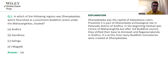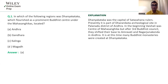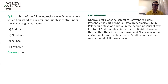The other options — Gandhar, Kalinga, and Magadha — are incorrect. Gandhar is known as a Mahajanapada of the 6th century BCE. Kalinga is the area Ashoka wanted to annex; the battle between Ashoka and Kalinga happened in 261 BC, resulting in a heavy bloodbath. Magadha was the strongest Mahajanapada of that time. So the answer is Andhra.